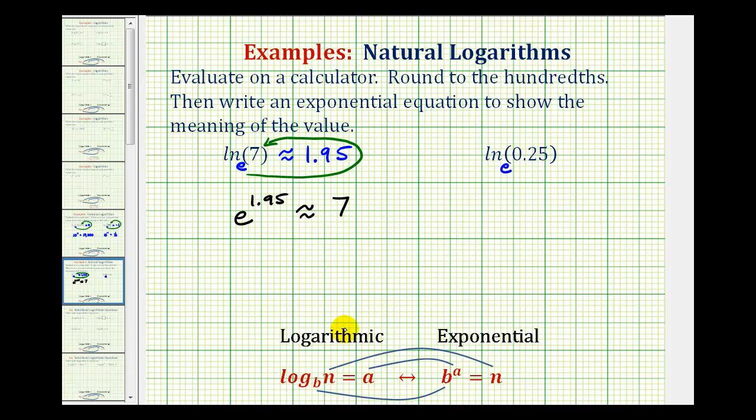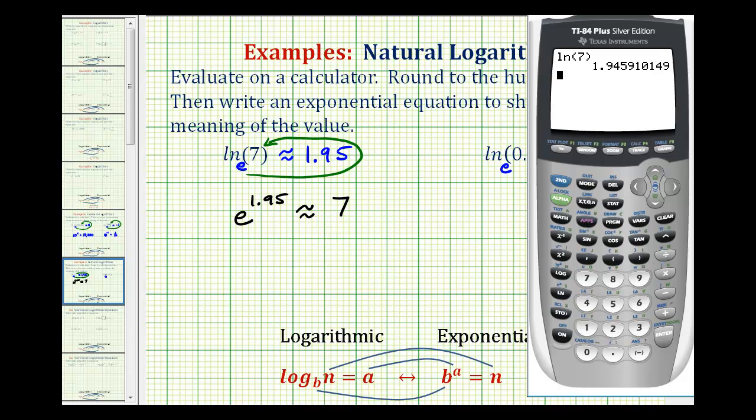We can go ahead and verify this on the calculator as well. If we press second natural log, we'll bring up e raised to the power of 1.95. Press enter. Notice how it is approximately 7. It is a little bit larger because we did round up when rounding to the hundredths.